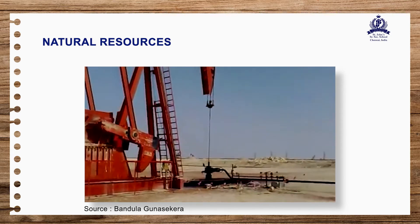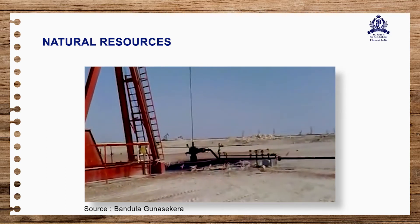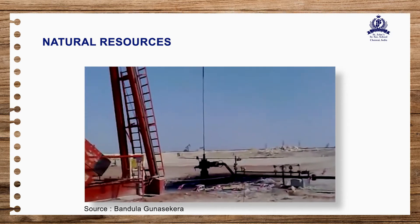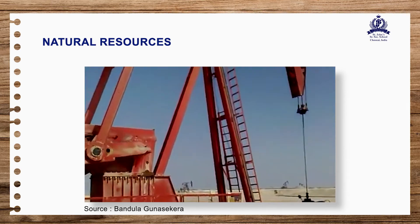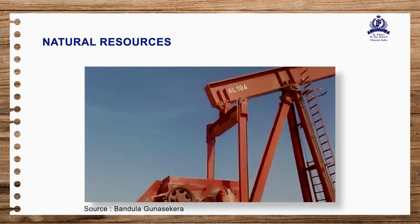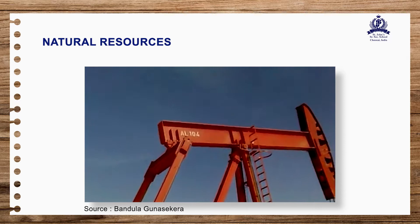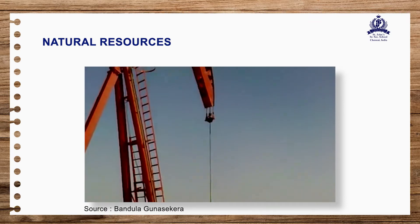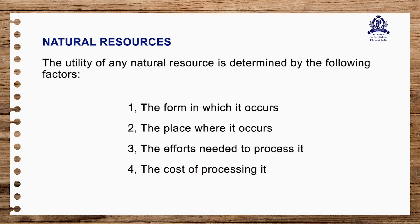The place where natural resources occur influences their use. For example, some mineral resources occur on the earth's surface while others may occur deep under the earth's surface. It is difficult to mine beyond a depth of 2000 metres, therefore minerals occurring at such depth cannot be used by human beings. The utility of any natural resource is determined by: the form in which it occurs, the place where it occurs, the efforts needed to process it, and the cost of processing it.